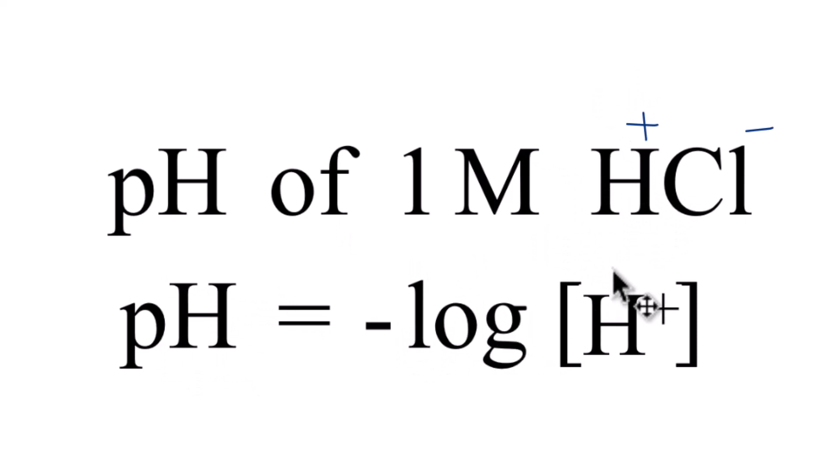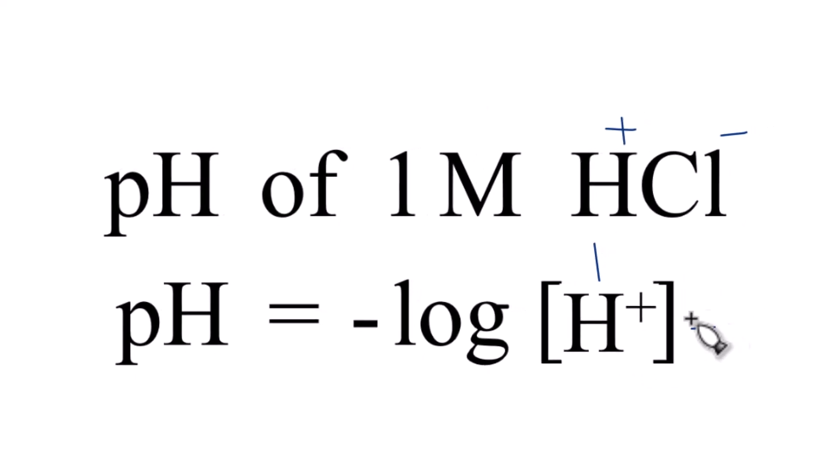So we're just taking the negative log of 1. The log of 1 is zero, so the negative log is just negative zero, which is zero.